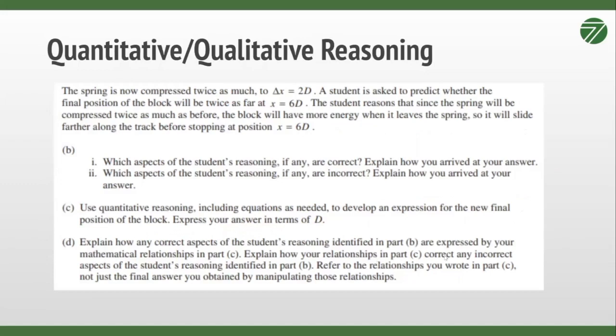This is the quantitative qualitative reasoning question. This question type is very unique to the physics 1 and physics 2 tests in that basically what they want you to do is they want you to be able to reason quantitatively, that would be equations and graphs, and qualitatively. Do you understand qualitatively how things are going to play out? Are you able to hear somebody explain stuff and say that doesn't seem right based on what I know about physics?